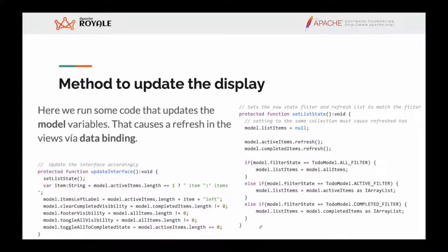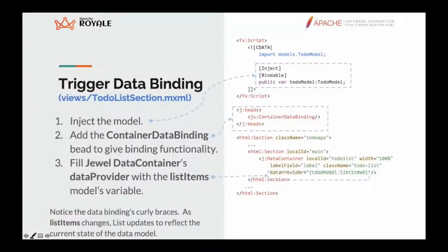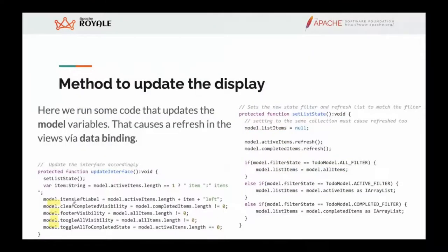This is the code we use in the controller to change the model variables — all are model variables that change to update all application variables in the model correctly. As we change these variables in the model, this triggers data binding, and in that way we update the views.